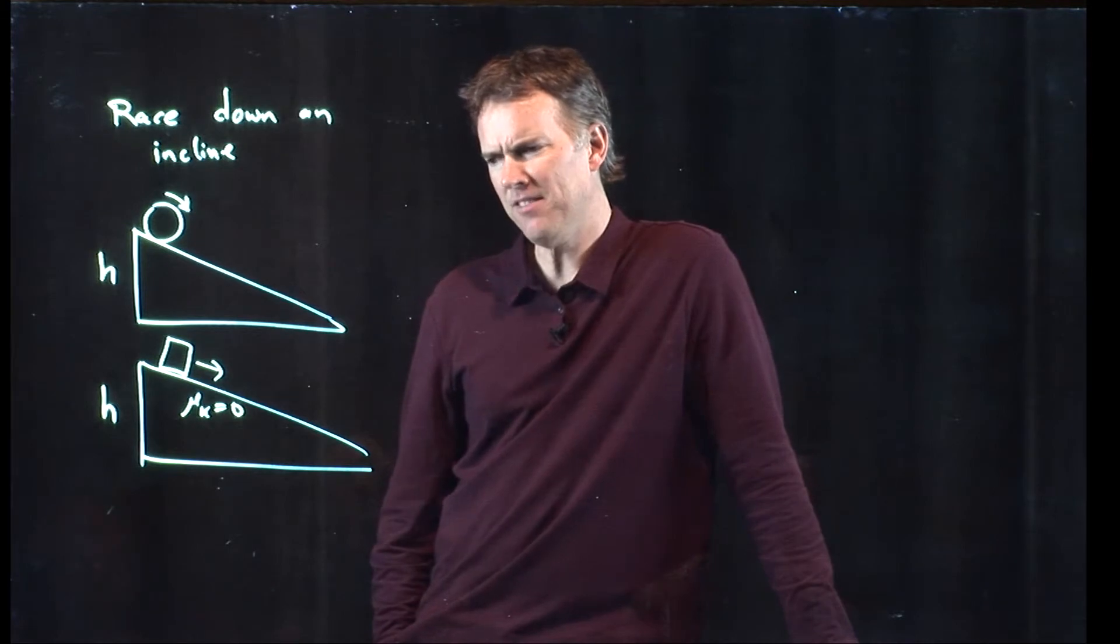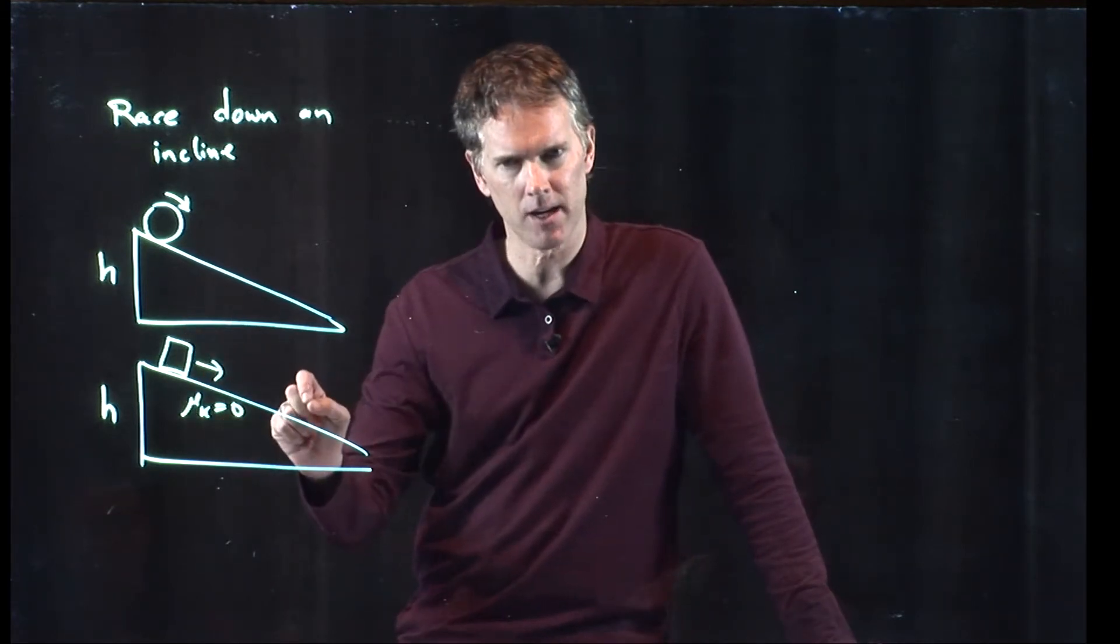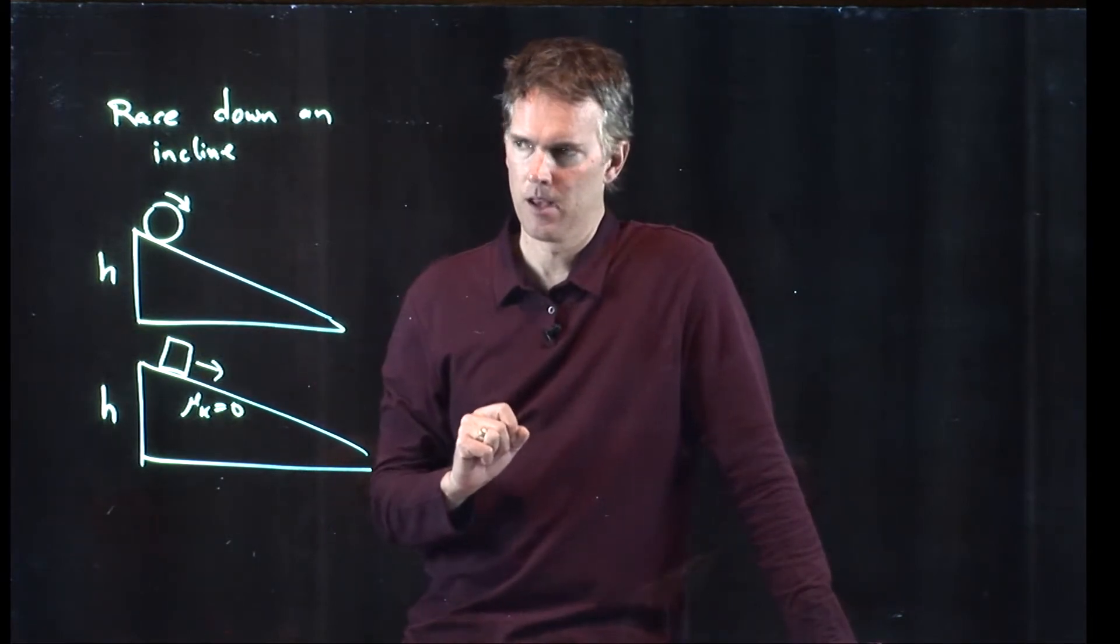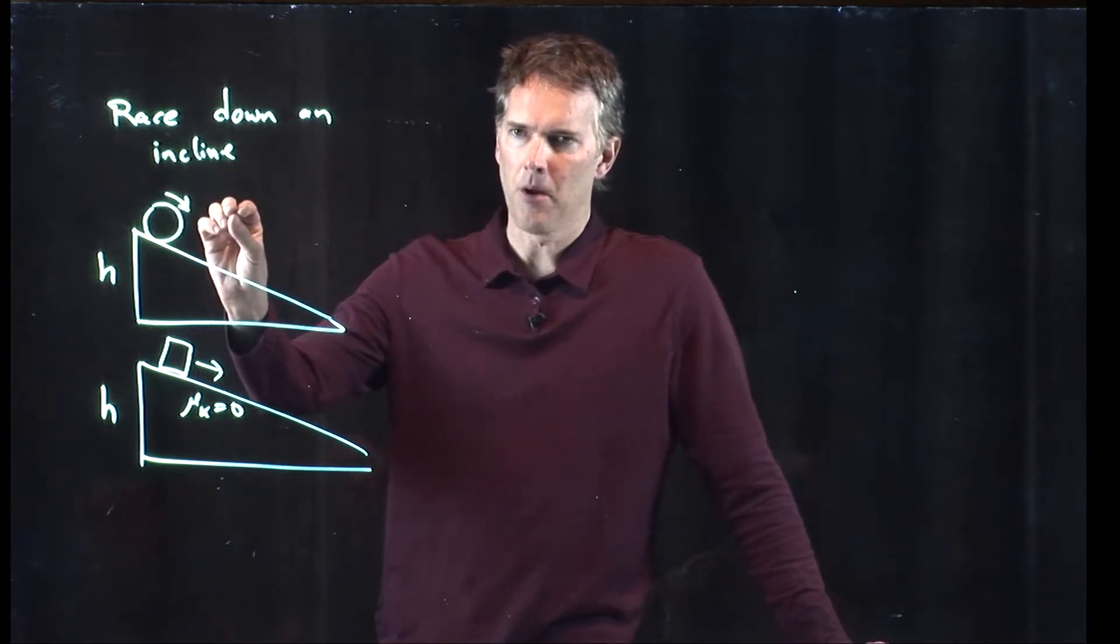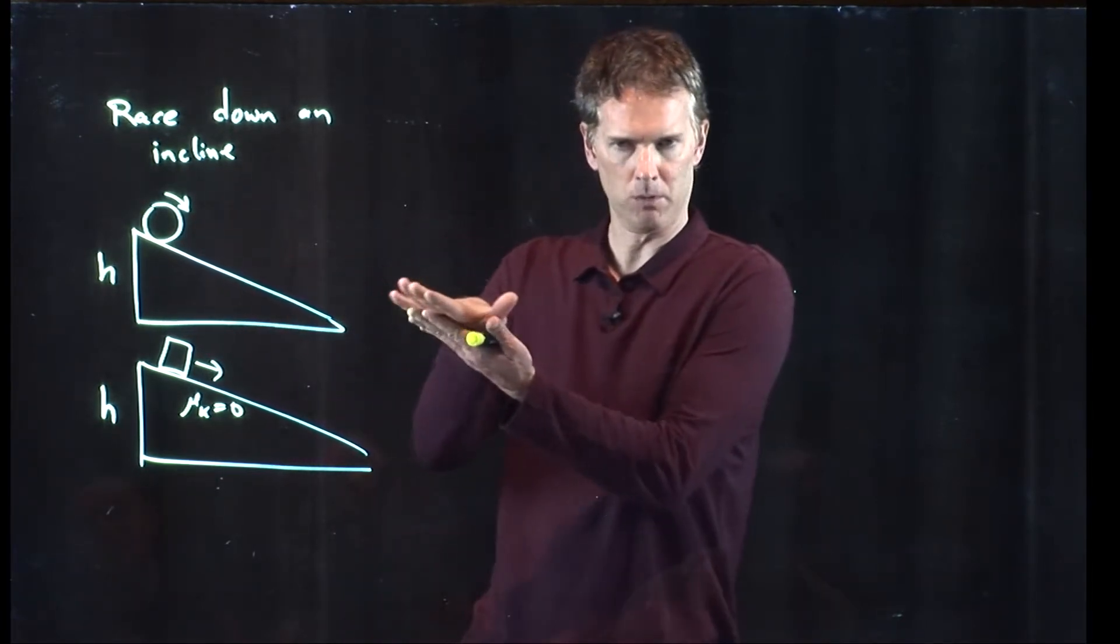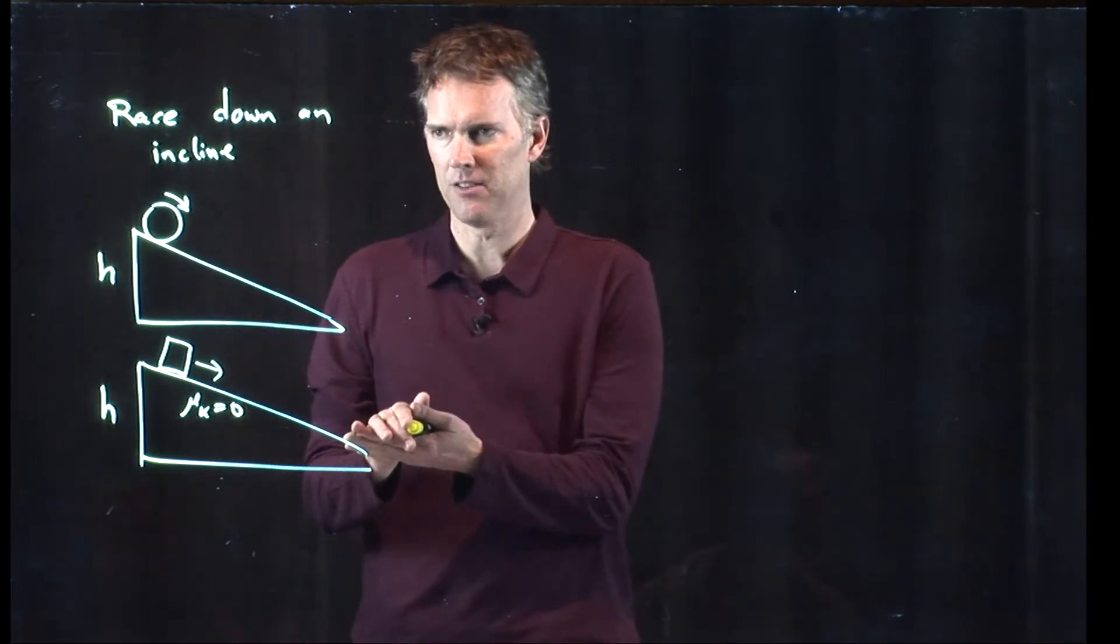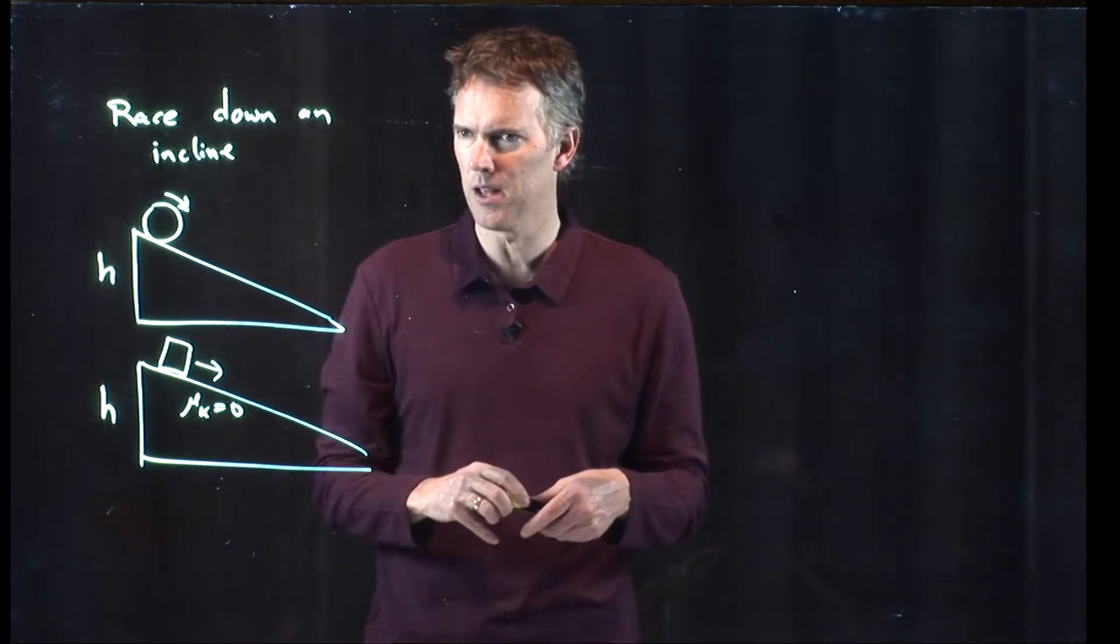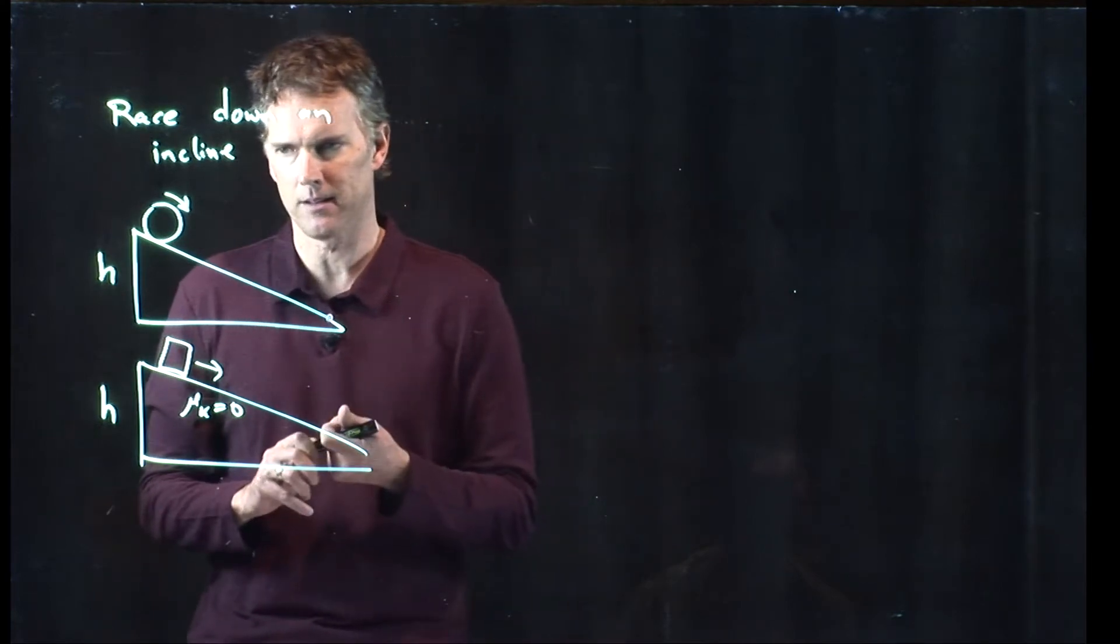It might seem like the box should win the race, but the key is that it's frictionless. We know if things are frictionless they move really easily. The fact that the wheel doesn't slip means that there's some static friction between the bottom of the wheel and the surface. You might say that's got to do something. It can't speed it up, it's got to slow it down. And you'd be right. But let's see if we can analyze this mathematically.